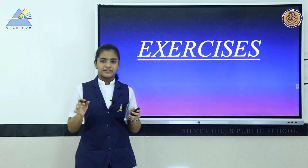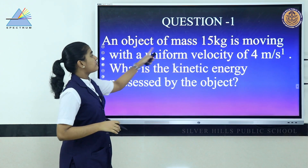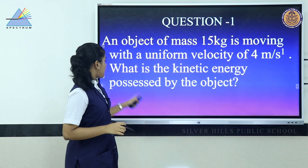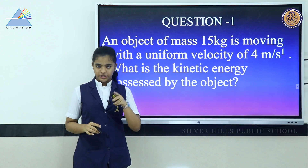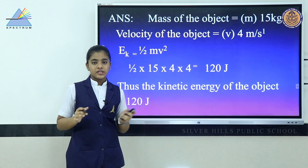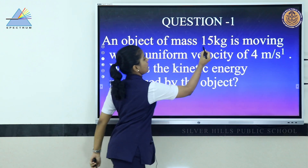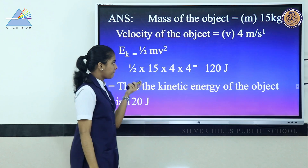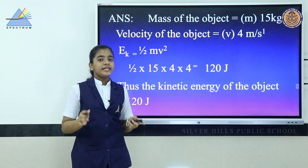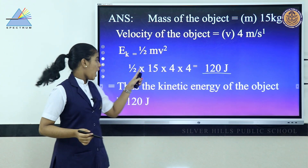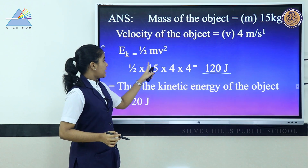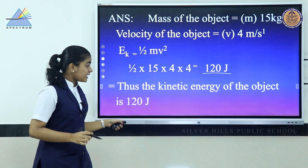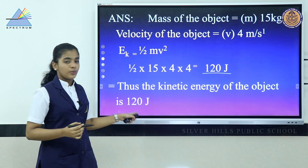Exercise 1: An object of mass 15 kg is moving with a uniform velocity of 4 m/s. What is the kinetic energy possessed by the object? Given: mass = 15 kg, velocity = 4 m/s. Using KE = ½mv²: KE = ½ × 15 × (4 × 4) = ½ × 15 × 16 = 120 joules. The kinetic energy of the object is 120 J.